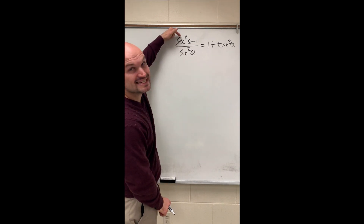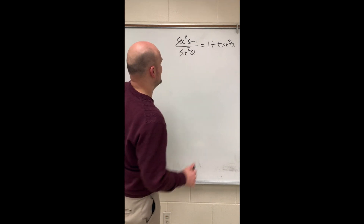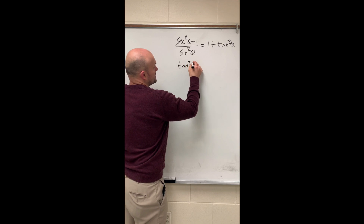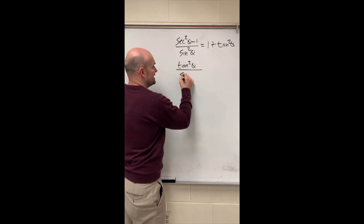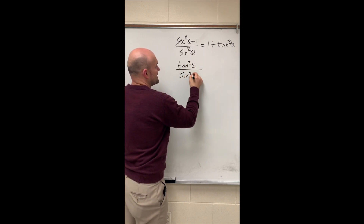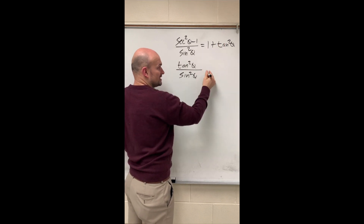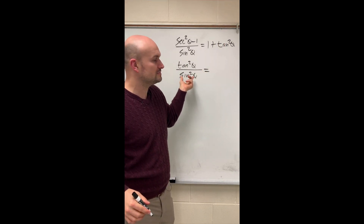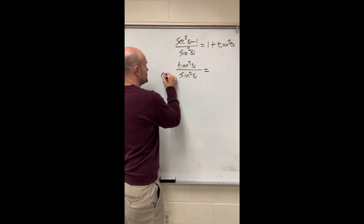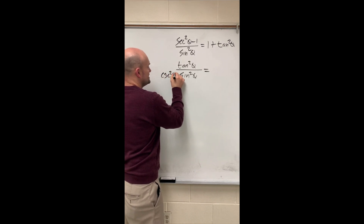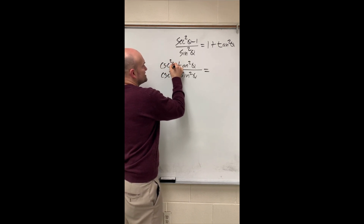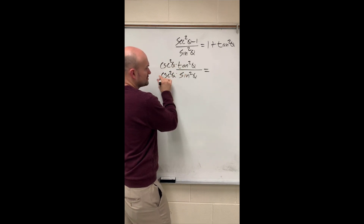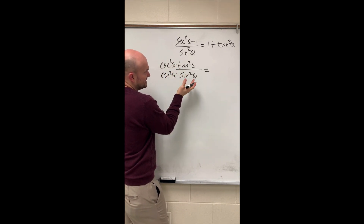I see secant squared of theta minus one, and I recognize that to be tangent squared of theta using my Pythagorean identities. Now if I want to make this left side look like the right side, I need to get sine squared of theta off the denominator. So I'm going to multiply by cosecant squared, because that is the reciprocal, and reciprocal times sine squared is going to equal one.